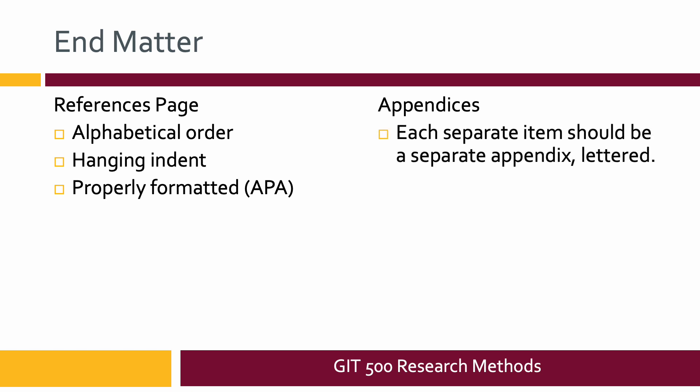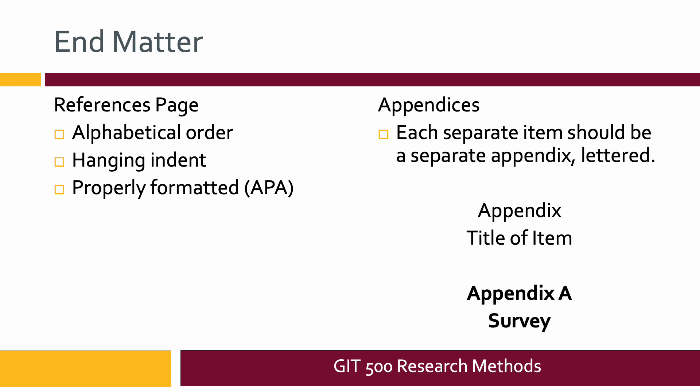The other end matter is appendices. Each separate item should be a separate appendix — 'appendix' is singular, 'appendices' is plural. You letter them, not number them: Appendix A, B, C, D, followed by the title of the item and then the actual item. Headings need to be bolded. For example, Appendix A would be the survey — that's not something you necessarily want in the body of the paper. Anything longer or ancillary that's important but doesn't need to be in the body can go in the appendix if it adds meaning and understanding to your paper.